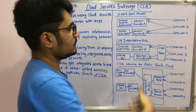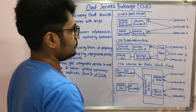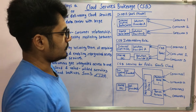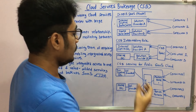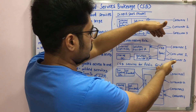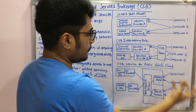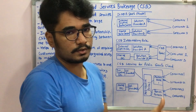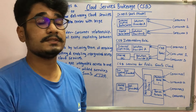Next is the CSB Intermediary Role. Here, a CSB portal is placed between the two parties, so all communications are routed through the CSB portal. It acts like a proxy — a mediator for communicating services that were previously handled via direct communication.